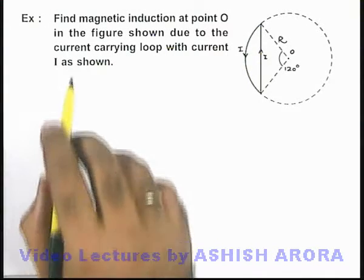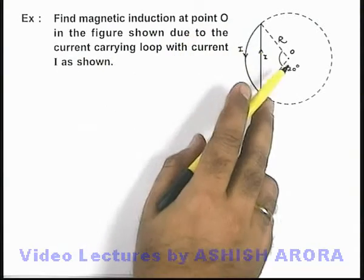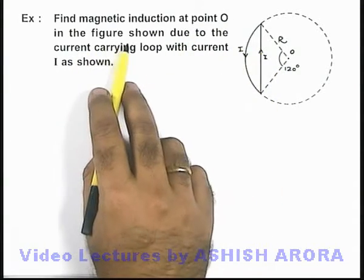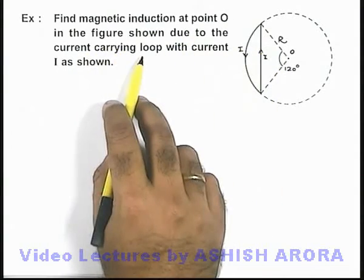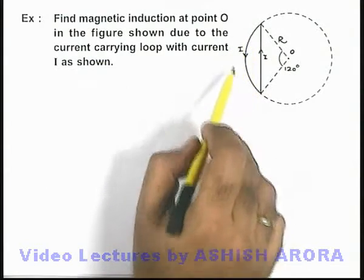In this example we are required to find the magnetic induction at point O in the figure shown due to the current carrying loop with current I as shown. This is the current carrying loop.